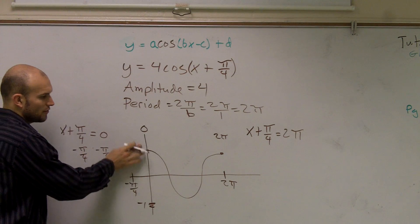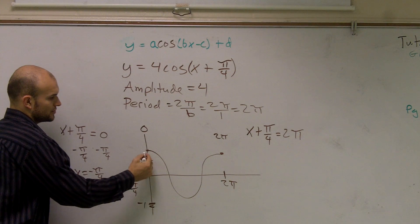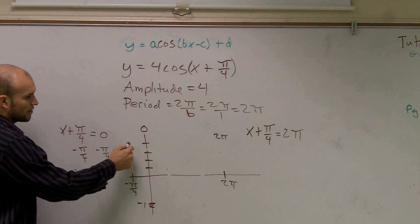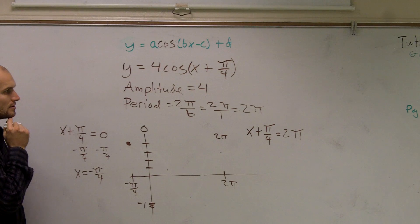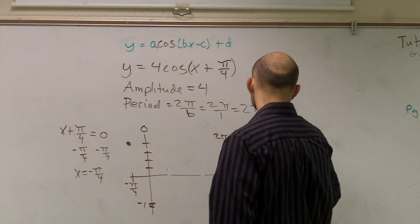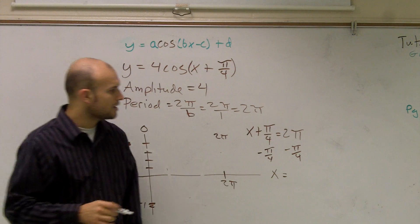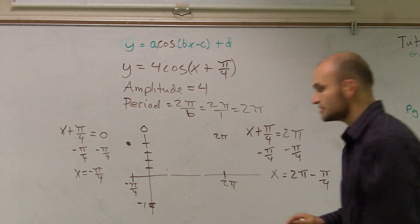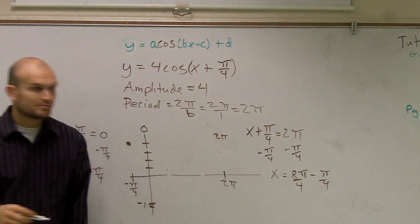This graph has an amplitude of four. My other endpoint: I subtract pi over four from two pi, so x equals two pi minus pi over four. Making that a common denominator — eight pi over four minus pi over four — gives me seven pi over four. So my right endpoint is at seven pi over four.